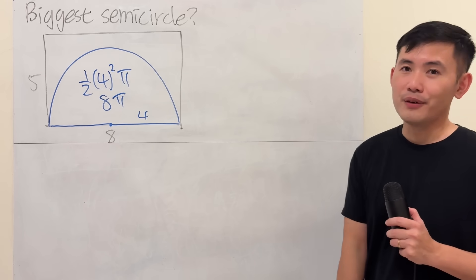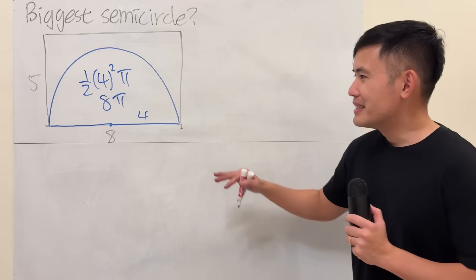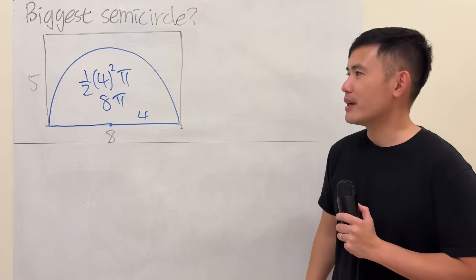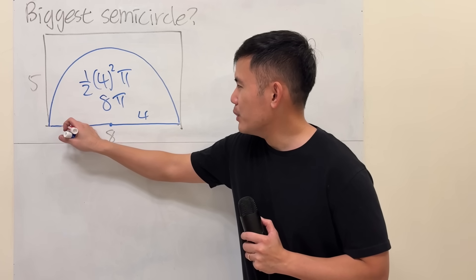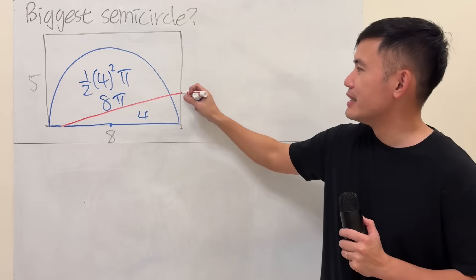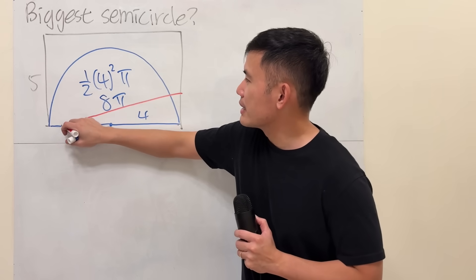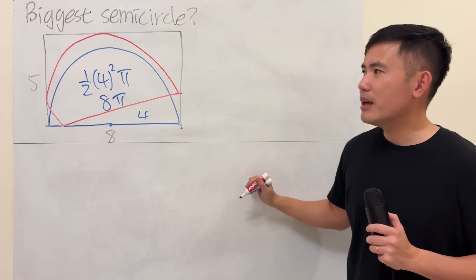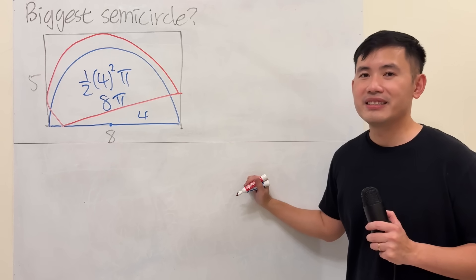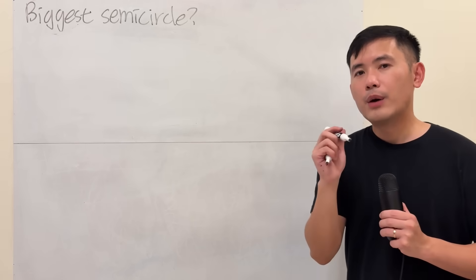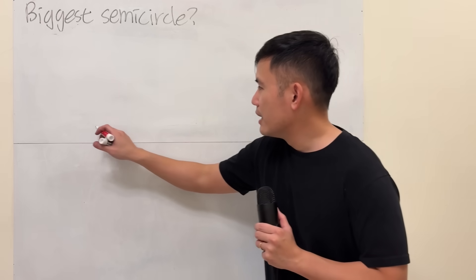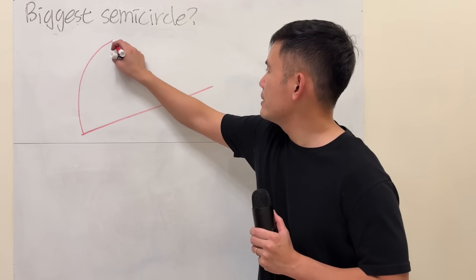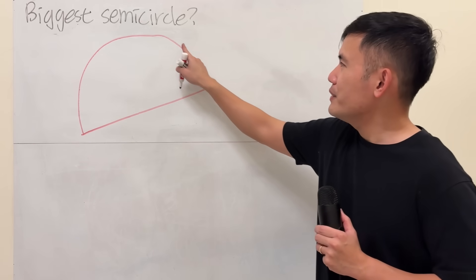Can we find a bigger one in this rectangle? And the answer is yes, of course. But how? Well, instead of putting the diameter right here on the base of the rectangle, what if we kind of tilt it a little bit like this, and then draw a semicircle like that? Will that be possible? Yes. And this is how I'm going to do it. I will draw the semicircle first — I think it's a little bit easier if I do it like this.